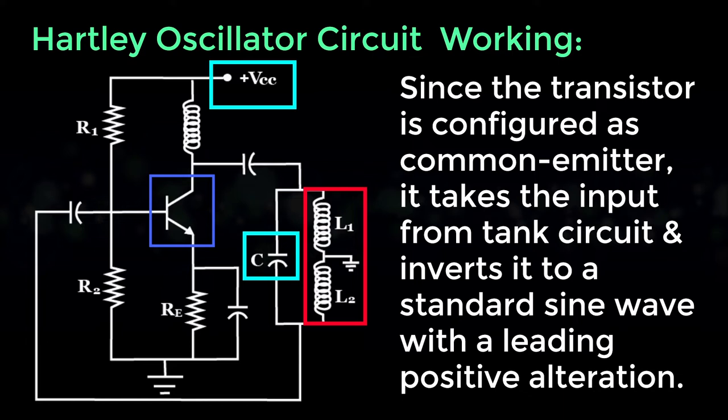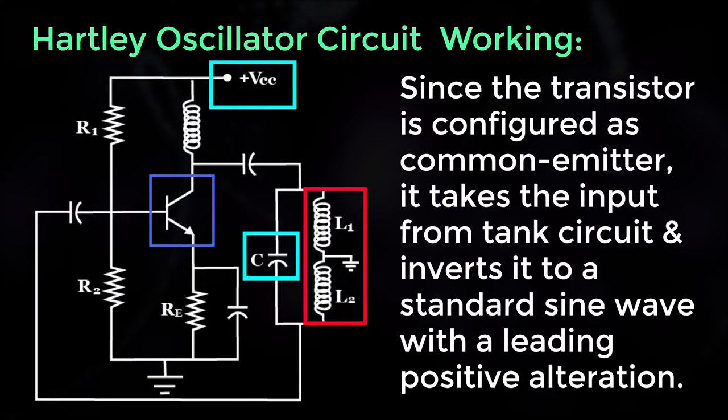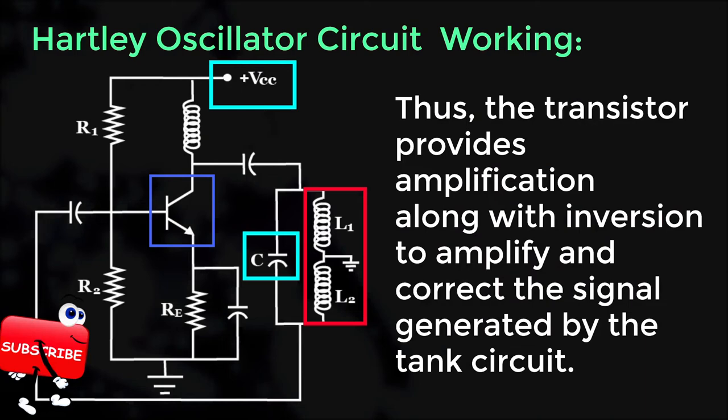it takes the input from tank circuit and inverts it into a standard sine wave with the leading positive alteration. Thus, the transistor provides amplification along with inversion to amplify and correct the signal generated by the tank circuit.